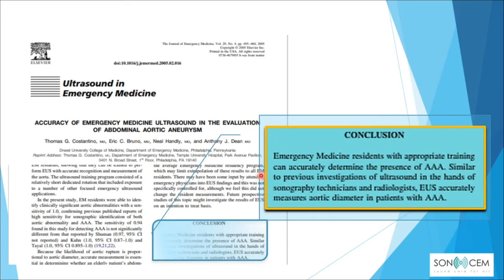Studies show that emergency medicine residents with appropriate training can accurately determine the presence of triple A, similar to sonography technicians and radiologists. Emergency ultrasound can accurately measure aortic diameter in patients with triple A, with studies showing only about 1 mm difference between measurements by emergency physicians and sonographers.